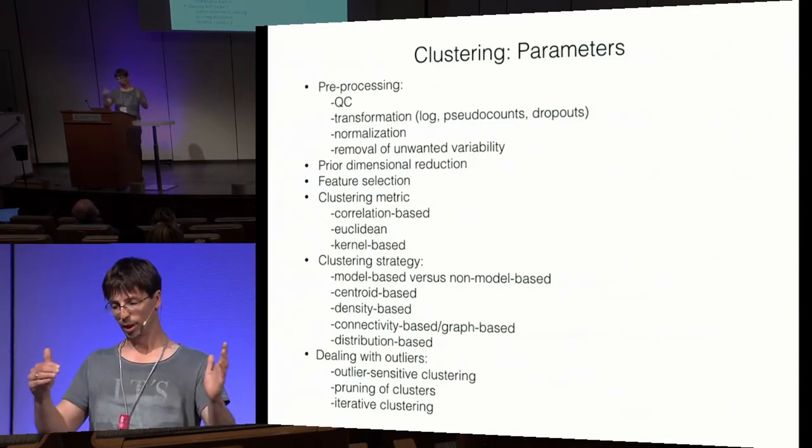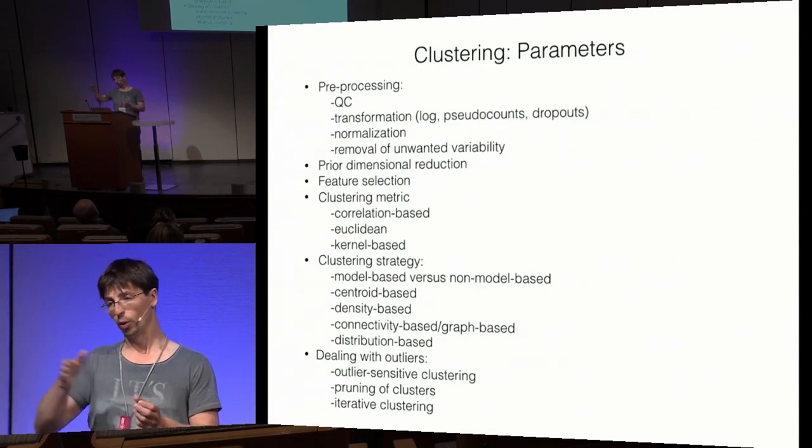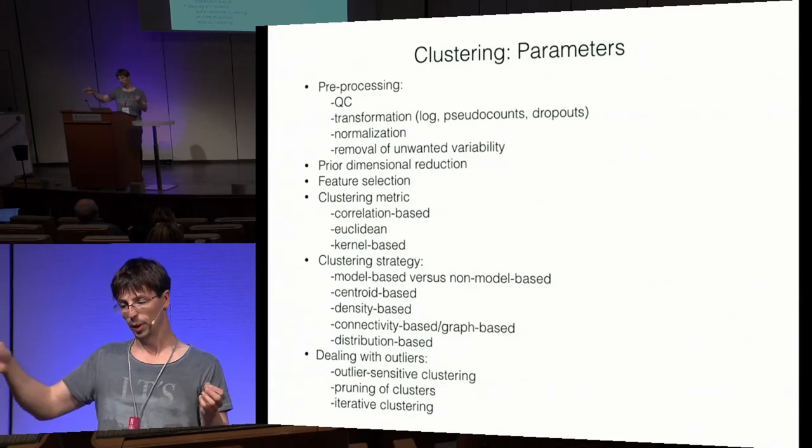These parameters form a multidimensional sampling space where each dimension is one parameter and you select points along each. Feature selection is very important: do you cluster on all genes, only variable genes, or make a supervised guess and use genes you think are important for your biological system? The clustering metric is also central — obvious choices include correlation-based, Euclidean, kernel-based, or probability-based distance metrics.